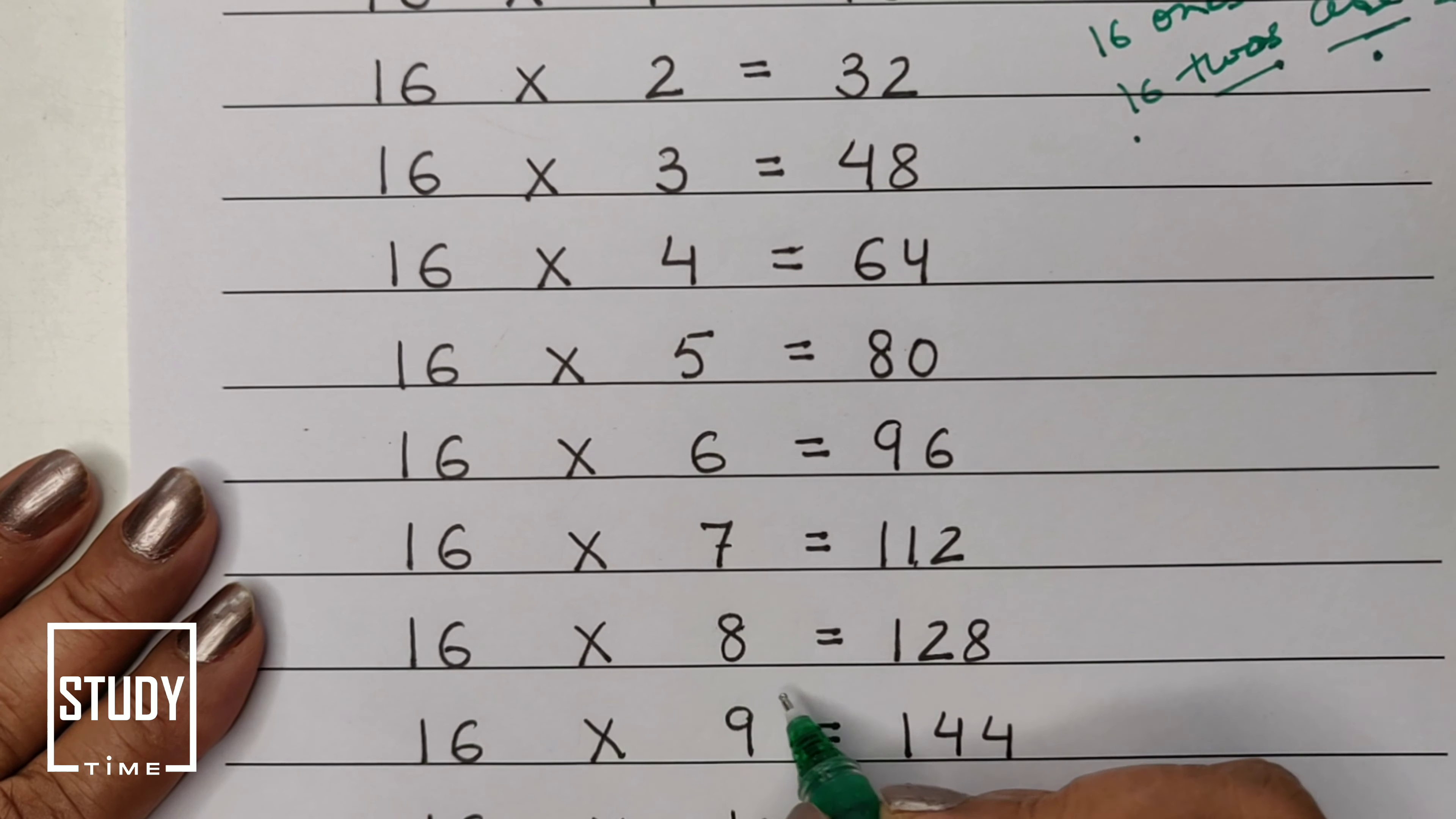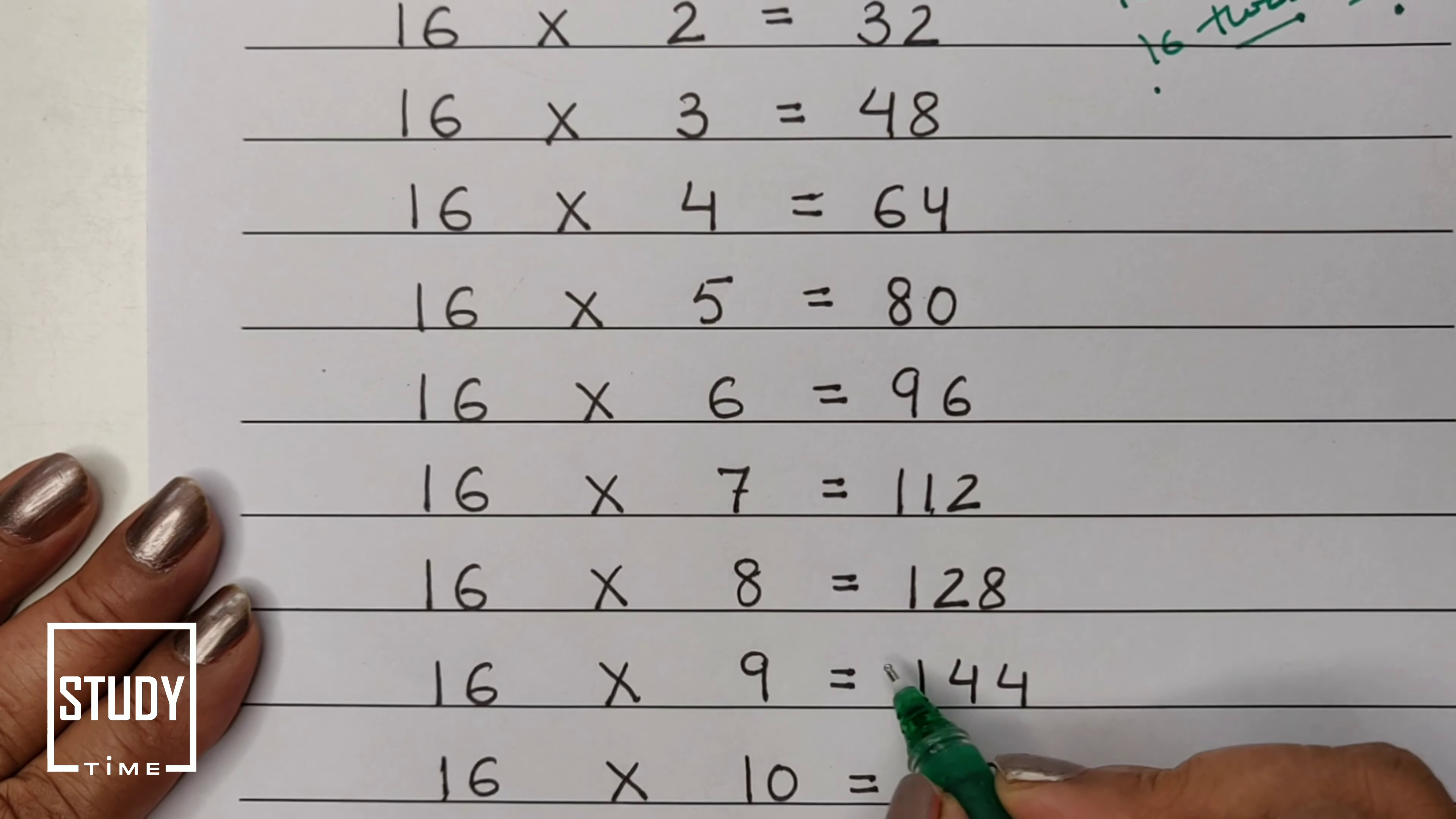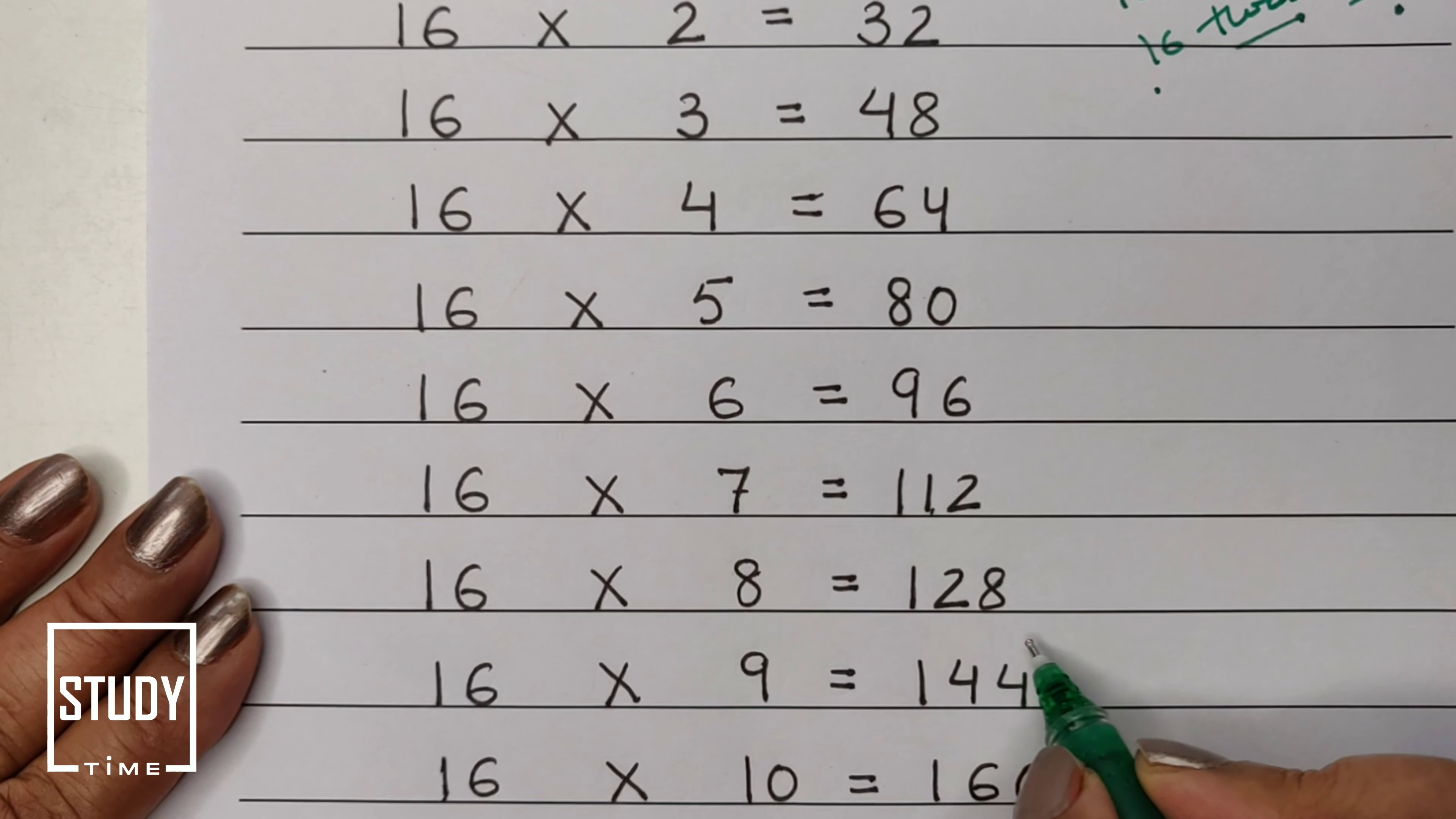16 eights are 128, 16 nines are 144, and 16 tens are 160. I hope this video will be useful for you.